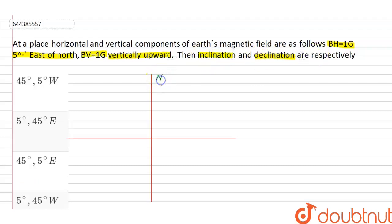According to question, at a place, horizontal and vertical components of Earth's magnetic field are as follows. BH equal to 1G, 5 degree east of north.